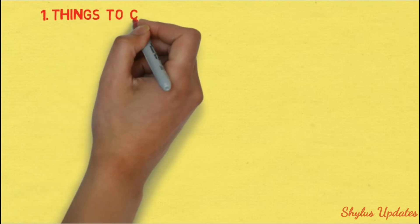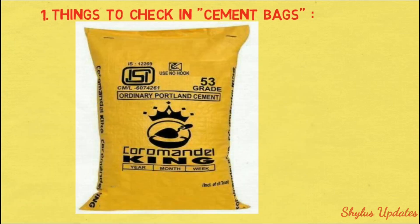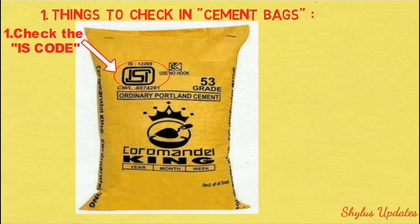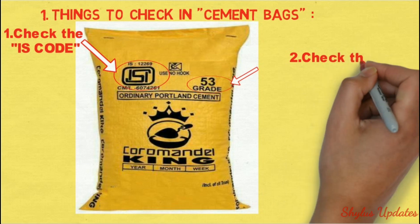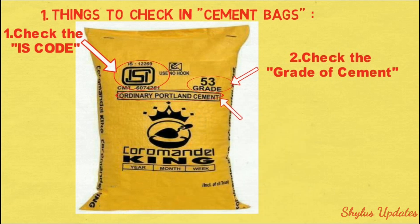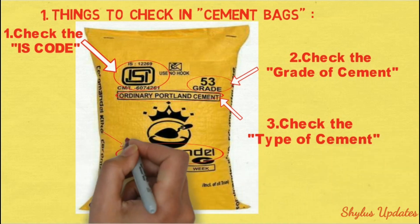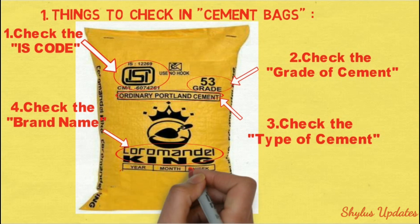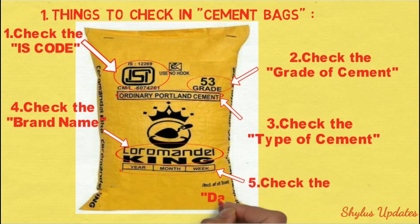First, let us see things to check in cement bags. Check the IS code, check the grade of cement, check the type of cement, check the brand name, and check the date of packing of the cement.